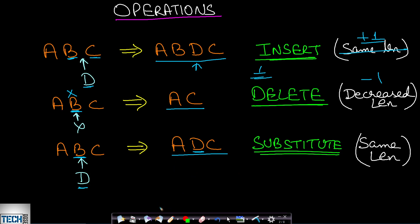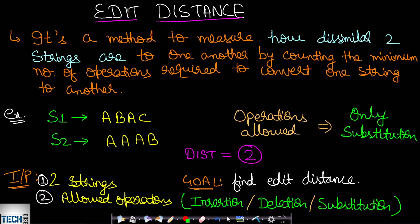After knowing the operations, let us move on to the definition of edit distance. What is edit distance? It is a method to measure how dissimilar two strings are to one another by counting the minimum number of operations required to convert one string to another. In this problem, we will be given two strings S1 and S2, and we will be required to find the minimum edit distance to convert S1 to S2.